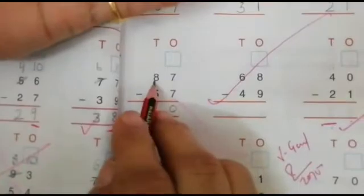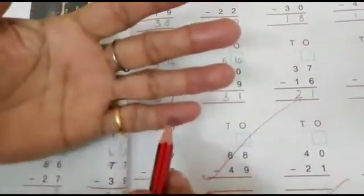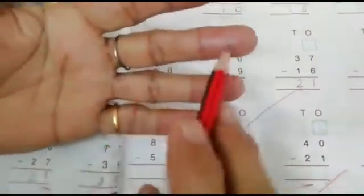Now 8. Count on fingers: 1, 2, 3, 4, 5, 6, 7, 8.